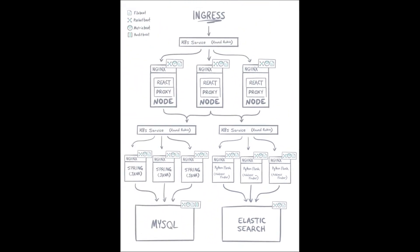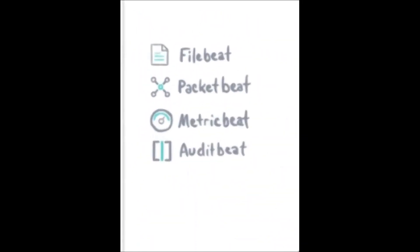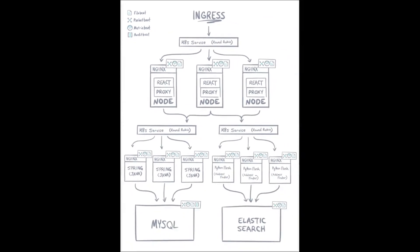To monitor everything, we've instrumented the application services with our APM agents for React, Node, Python, and Java, and we're using FileBeat, PacketBeat, and MetricBeat deployed as Kubernetes DaemonSets to collect logs and metrics from each of the application service pods. With Beats Auto Discovery, monitoring new pods as Kubernetes scales the application services is handled automatically for us.